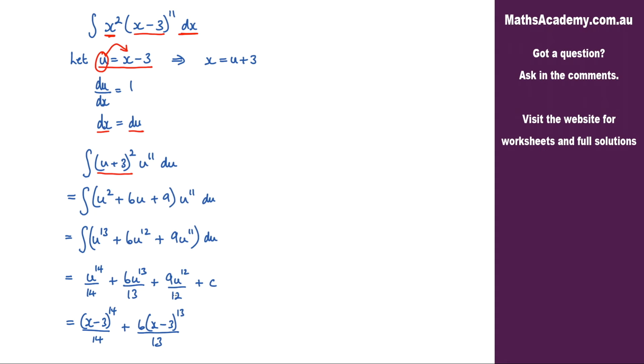Now here we've got a 9 and a 12, so I can cancel these down. So 3 goes into 9 three times and into 12 four times. So we're adding on 3 times x minus 3 to the power of 12 over 4, and then plus the constant of integration.